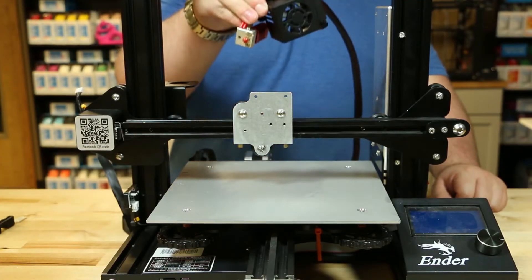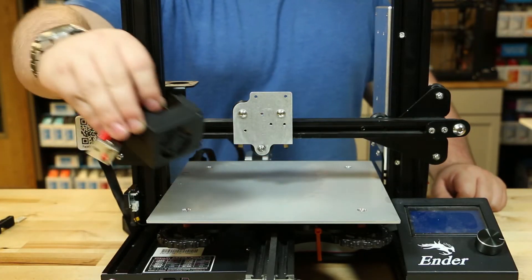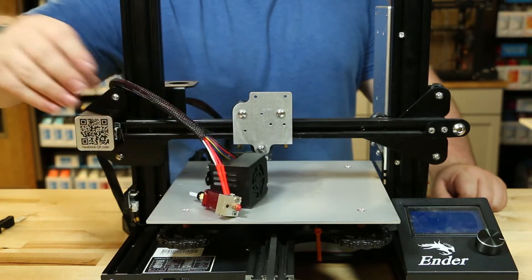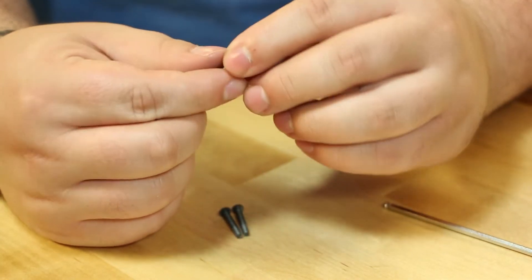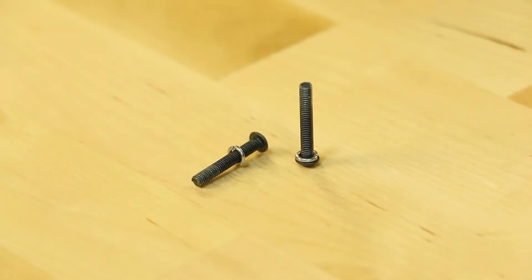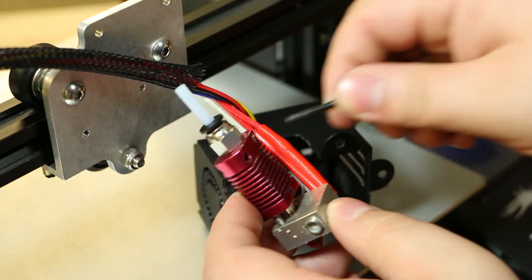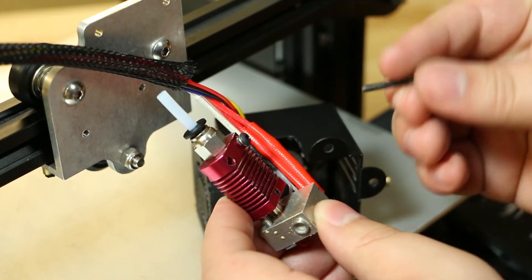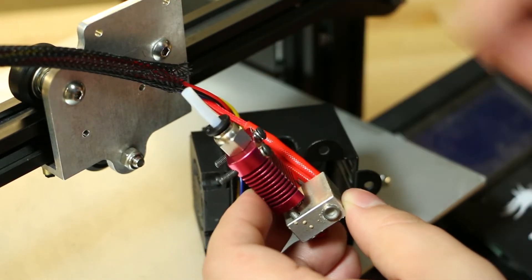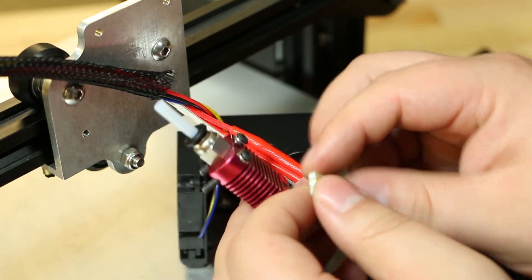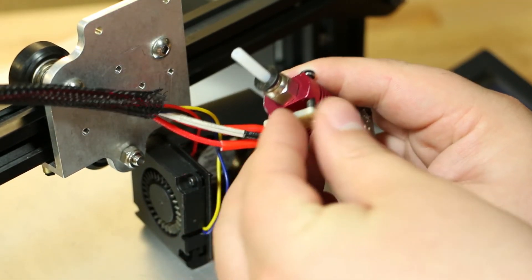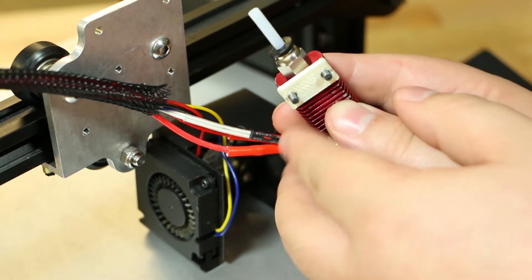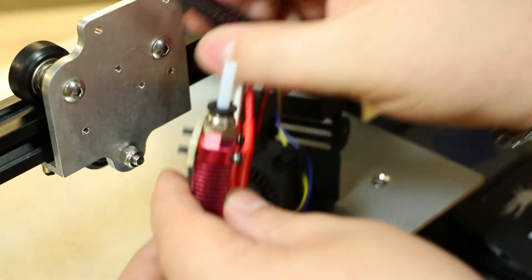Make sure to have your hot end and shroud wires coming from the side and not over the top of the X-axis gantry. Take the washers from the hot end screws and attach them to the new screws from the kit. Take the new screws with the washers and put that through the hot end heat sink. Then, align the hot end spacer piece to the screws. Then, proceed to attach the hot end to the X-carriage.